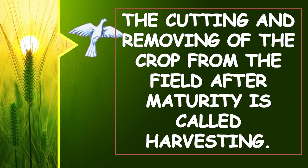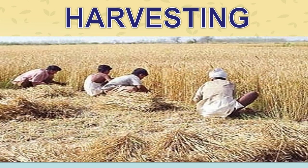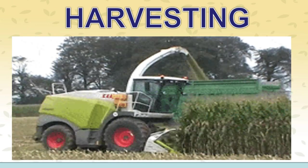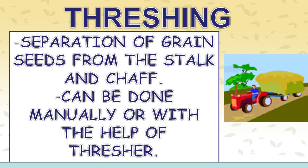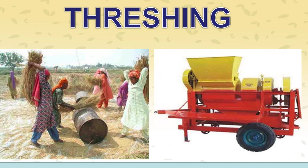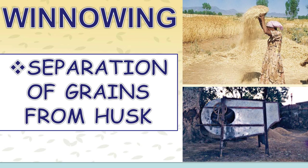Harvesting: The cutting and removing of the crop from the field after maturity is called harvesting. It can be done manually by sickle or by a machine called a harvester. Threshing: Separation of grain seeds from the stalk and chaff. It can be done manually or with the help of a thresher. Winnowing: Separation of grains from husk.